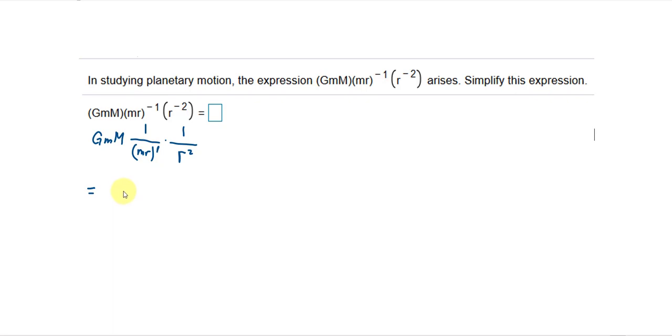And then also this one too. In order to change this one to positive 2, we bring it down, we flip it upside down, and then we put the 1 up here. Now you can combine them together. This one stays on the top, so I can just put G, M, and M. The M and R to the first power is the same thing as M and R. So I can keep that at the bottom, and then this one is R squared. They are at the bottom, so they multiply together.